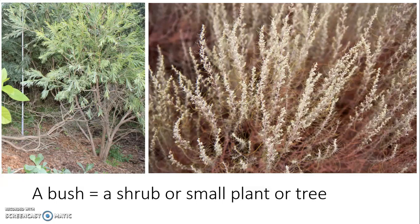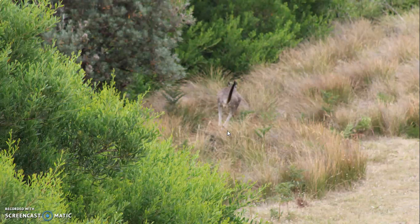First of all, we need to understand what a bush is. Another word for a bush is a shrub. These both mean a small plant, which could be 20 or 30 centimetres and not well structured, or it could be a small tree of one, two, or sometimes even three metres tall, as long as it is bushy — meaning it has a lot of leaves and they go out in all directions. So this is a bush, but what is the bush?